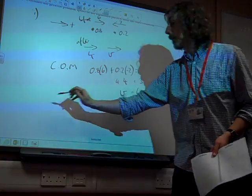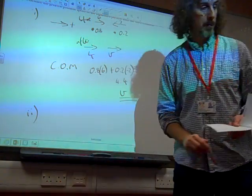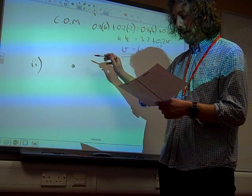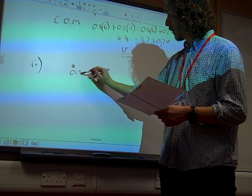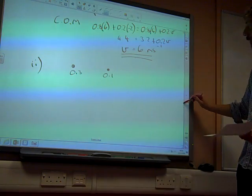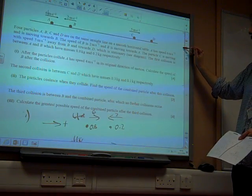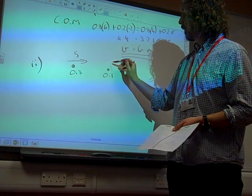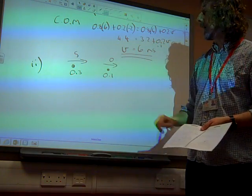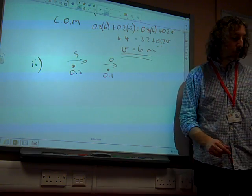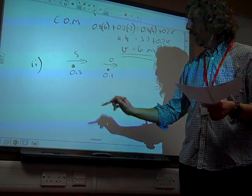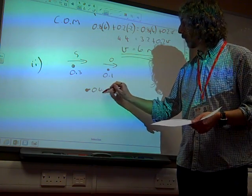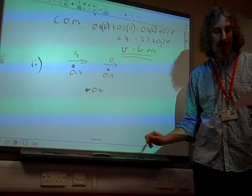We're doing the same thing. We're setting up the same diagram. We have the particles before and after again. We've got 0.3 and 0.1 as their masses. We've got 5, that's the initial speed of that one, and that one is at rest initially. Then afterwards, we have one new particle where they join together of mass 0.4, and we want to find its velocity.